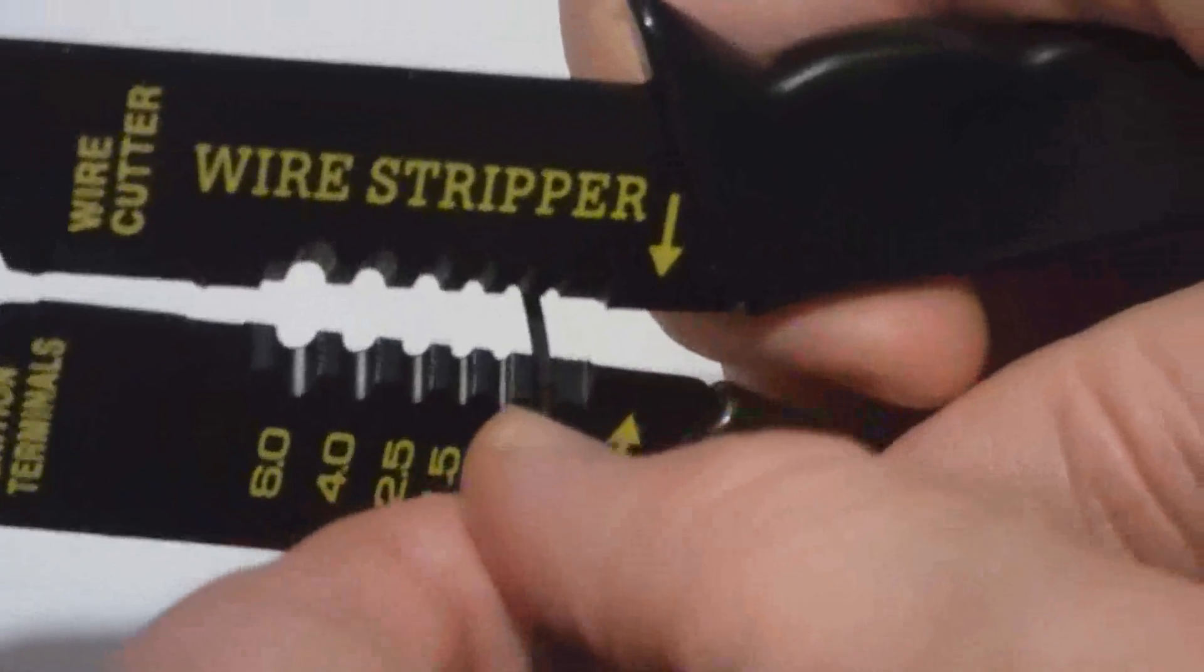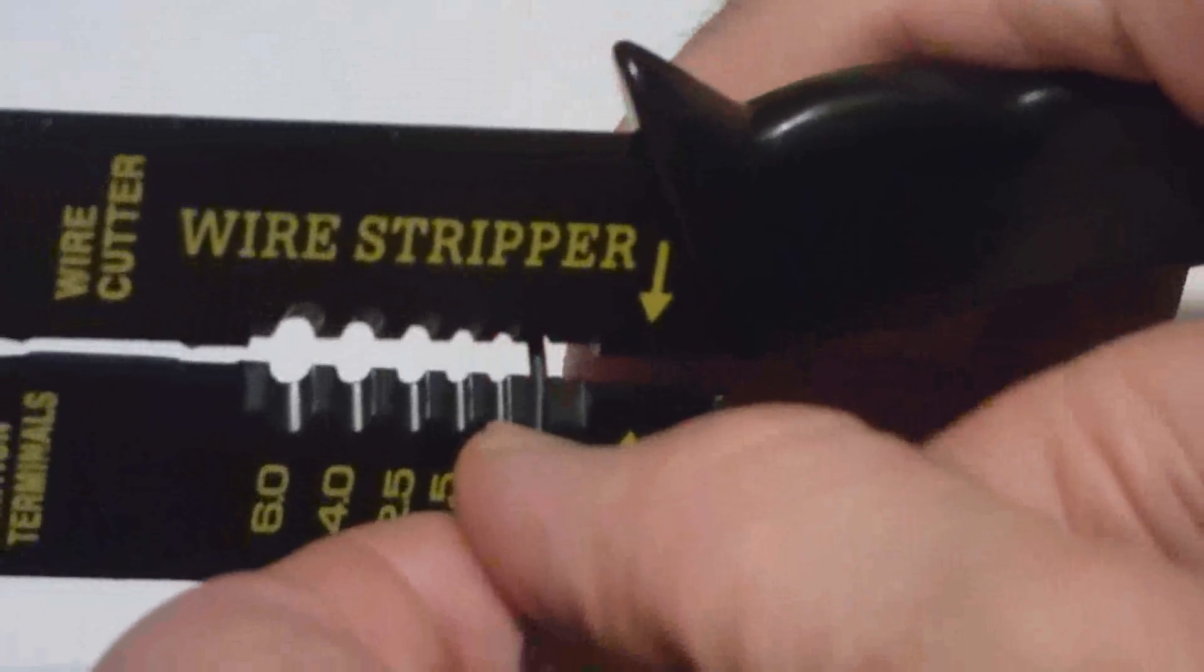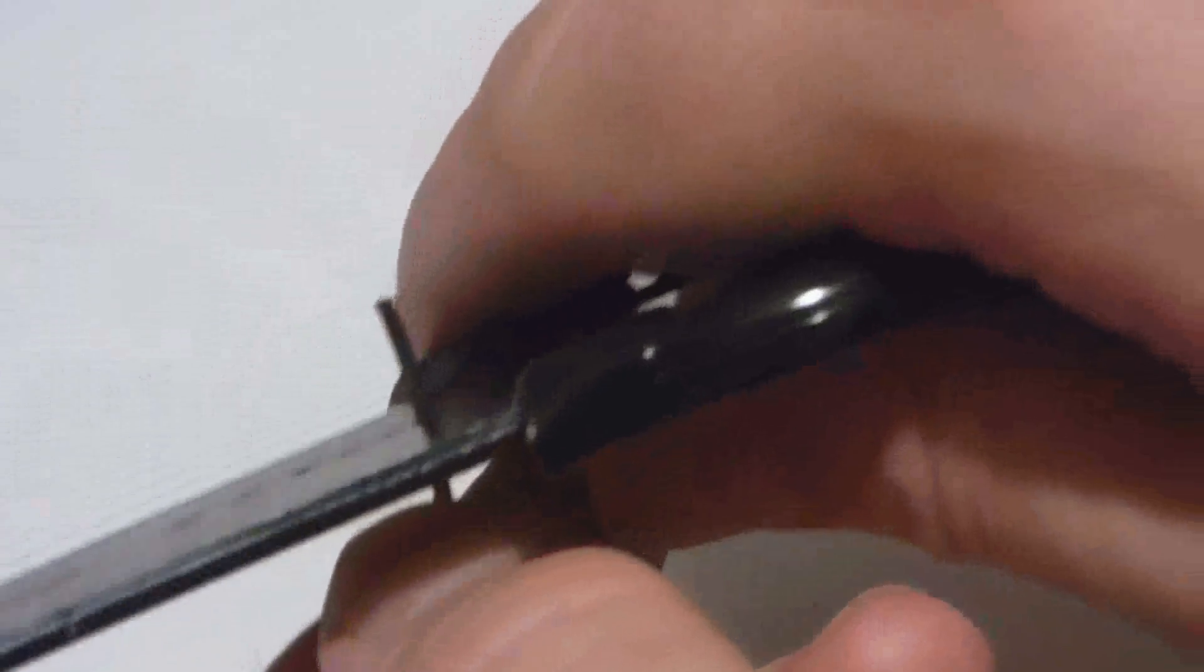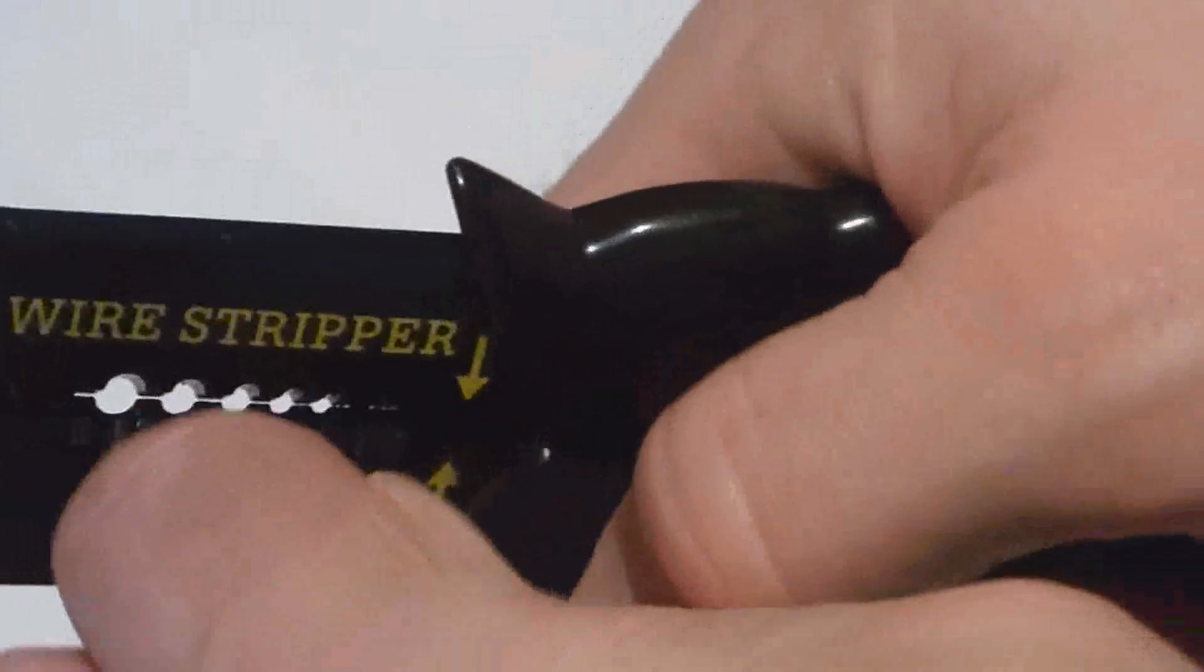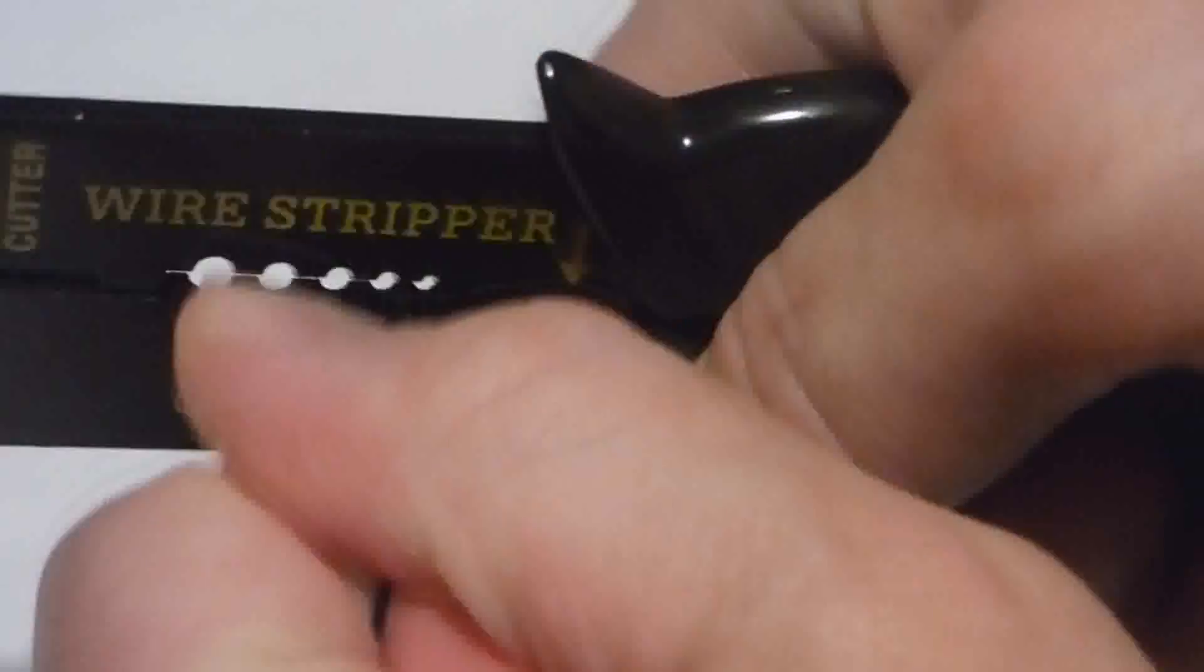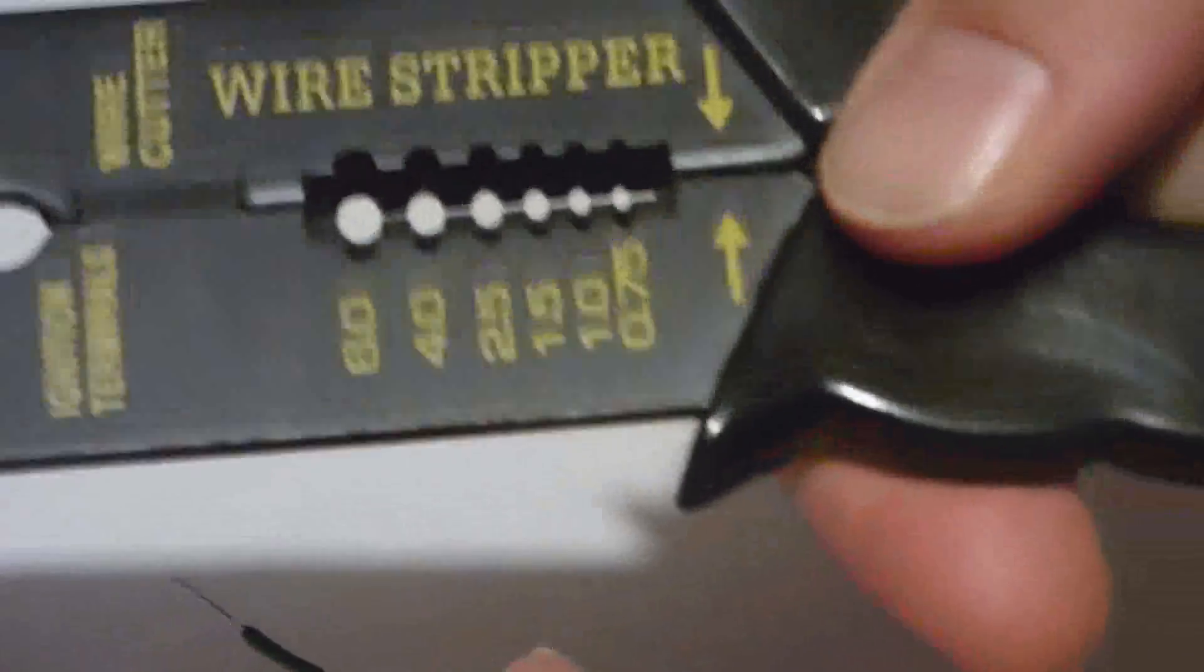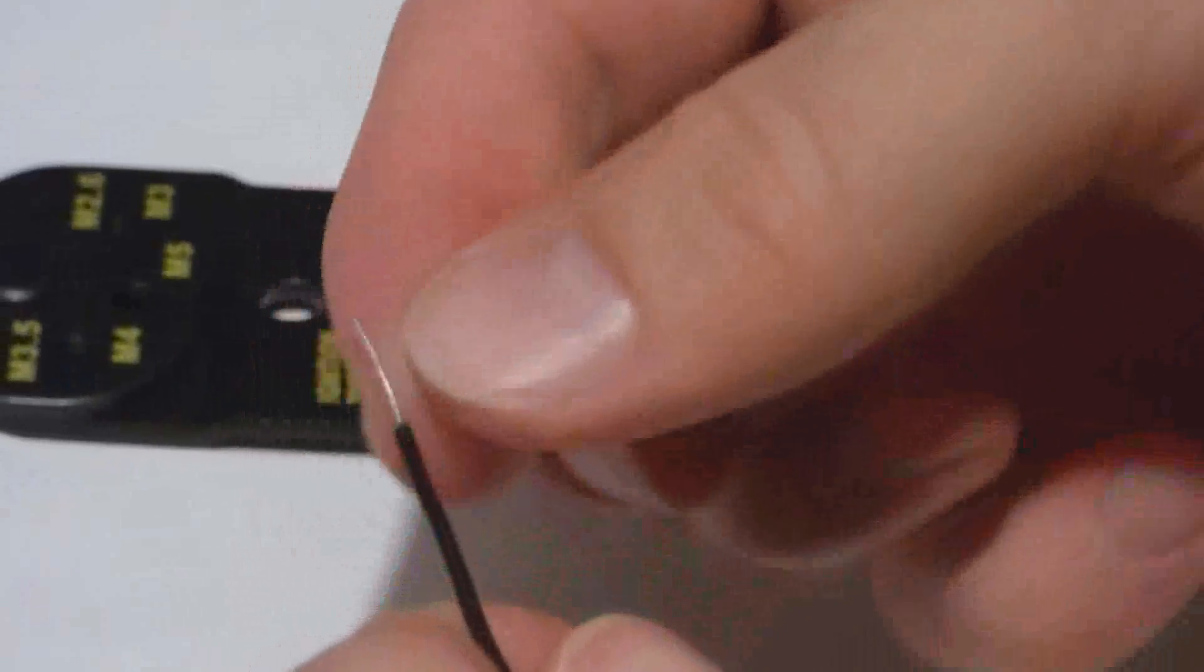So I'll put it in the smallest slot and I'm gonna have a lot of wire left over. I can always trim it if I need to. Then I squeeze it tight and wiggle it. I also think if I had a better tool they would fit better, but as you can see the plastic insulation just slips right off when you do that.